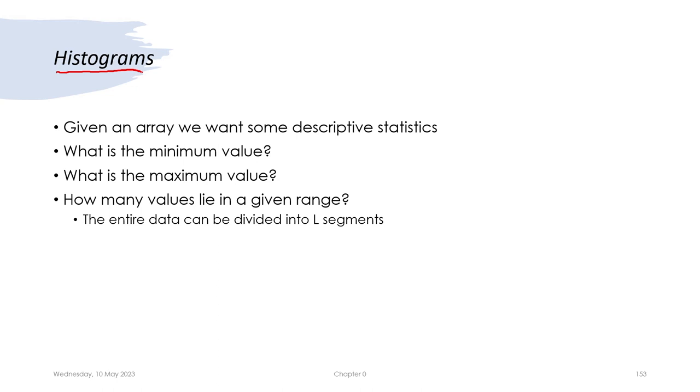A very warm welcome to all of you to another lecture on this course on simulation of communication systems. We have looked at generation of random numbers and how we can generate random numbers in MATLAB. At the same time, we have also tried to tabulate the outcomes of discrete random experiments such as the roll of a die and the throw of coins, and we have seen some success in plotting them as bar plots or as stem graphs.